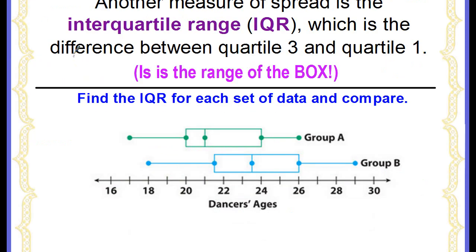Another measure of spread is the interquartile range, also known as the IQR, and this is the difference between quartile 3 and quartile 1. So basically it's the range of the box. Here we have our dancers' ages again, let's find the IQR for each.